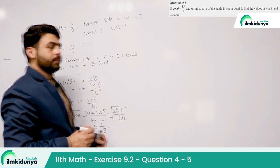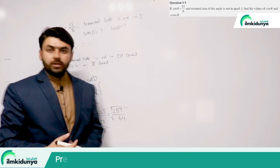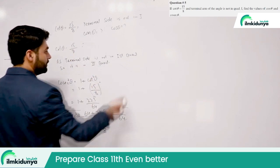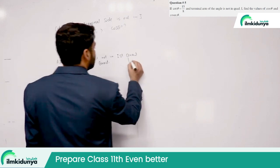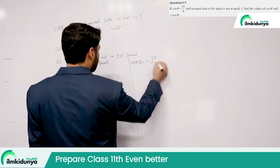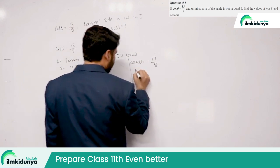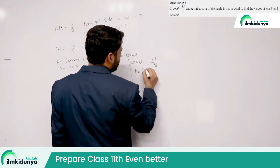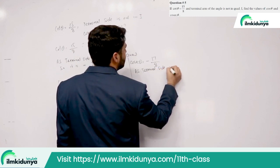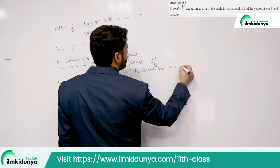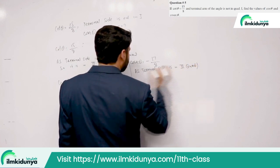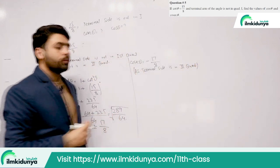Since cosecant is the inverse of sine, and in the third quadrant sine is negative, csc θ = −17/8, because the terminal side is in the third quadrant.